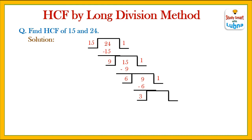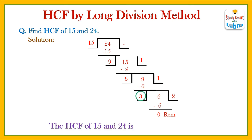We will divide the third divisor with the third remainder. 3 twos are 6. Now we subtract — the remainder is 0. We continue this process until the remainder is 0. So the HCF of 15 and 24 is the last divisor, which is 3.